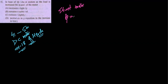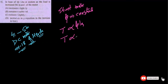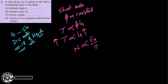In a shunt motor the flux remains constant. We know that torque is directly proportional to flux times current, so torque is directly proportional to armature current. If you increase the load, you are increasing the torque, so you require a high torque, which means high armature current. Speed is directly proportional to back EMF divided by flux, and in a shunt motor the flux remains constant, so speed depends only on the back EMF.